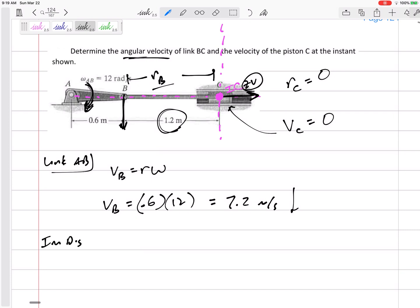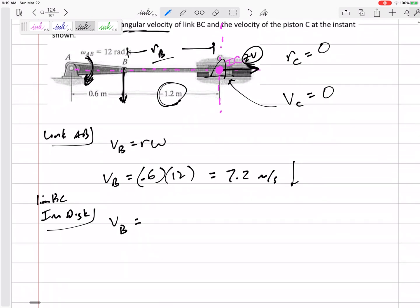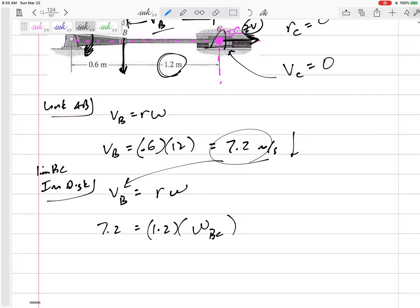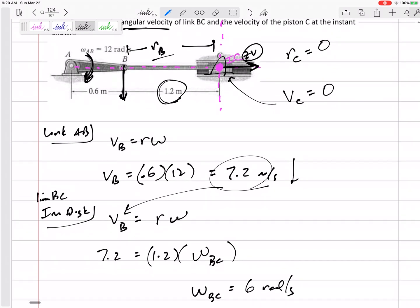All right. So now I'm going to look at my imaginary disc, which my link BC is glued on top of at this instant. And so I'm going to stick with point B, but a new R, a new omega. So this is 7.2 equals 1.2 times omega of BC, which I'm looking for. Do that math and get omega of BC six radians per second. Now that doesn't tell me clockwise or counterclockwise. I've got to visualize clockwise or counterclockwise.